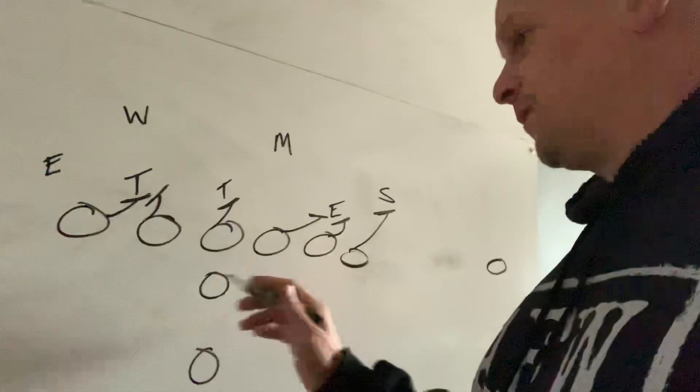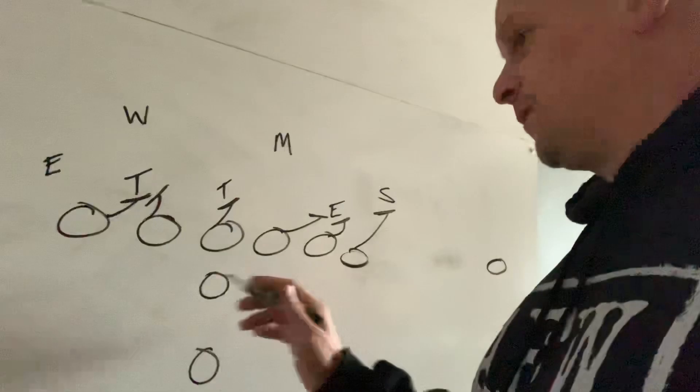You've got the 11 personnel package. You've got three wide receivers out there. You've got your tight end. You've got the quarterback, and here is your tailback.